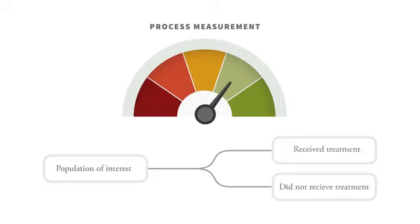For example, there are recommendations about the use of cancer screening tools in some populations. Women fitting some age and health profiles should get a mammogram from time to time, or people meeting some age and health profiles should get colorectal cancer screening. One can define those populations and then query databases or use other tools and methods to see if people in these groups are getting the recommended care or not.